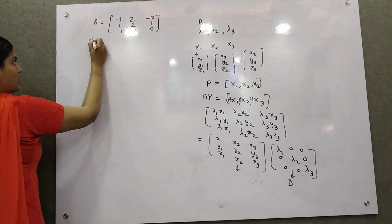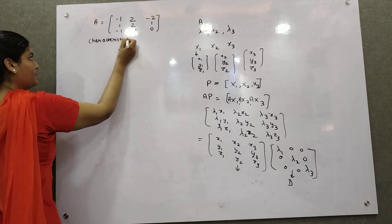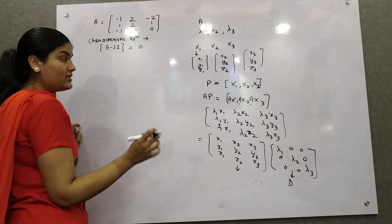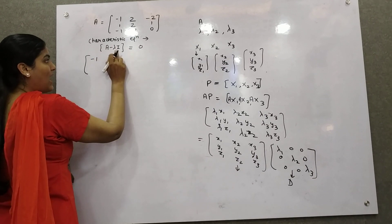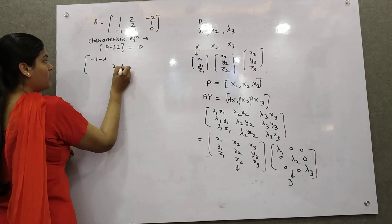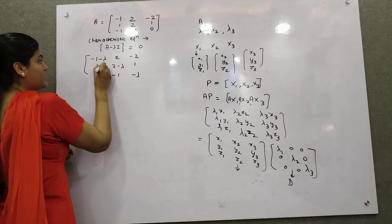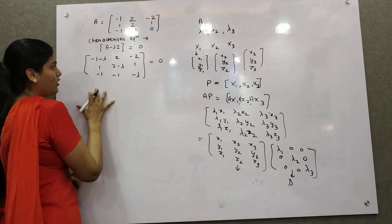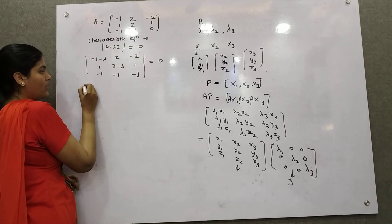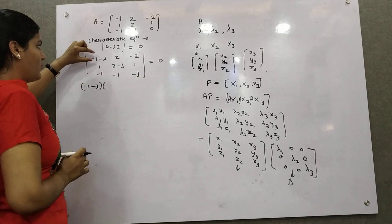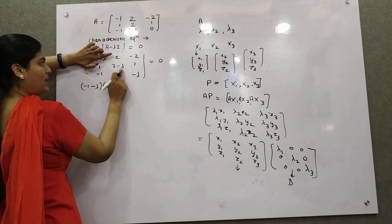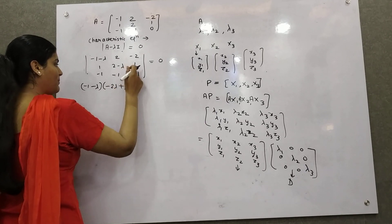So how can we calculate it with the help of an example? Your characteristic equation first, which you know from other videos: A minus lambda*I equals 0. Because the identity matrix has only diagonal elements as 1, you will do: (−1 − lambda), (2 − lambda), (−lambda) — rest of the elements remain the same. Now solve it as a determinant.